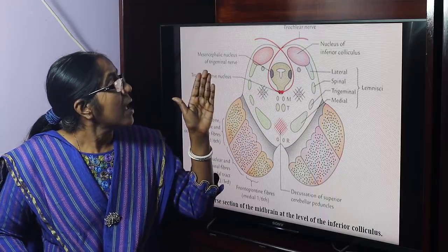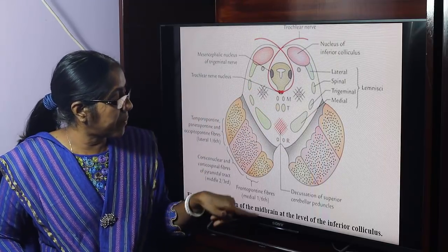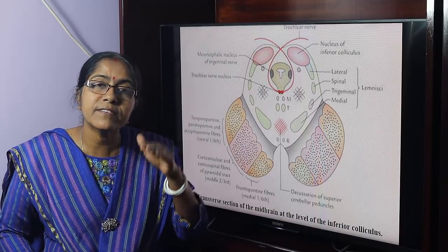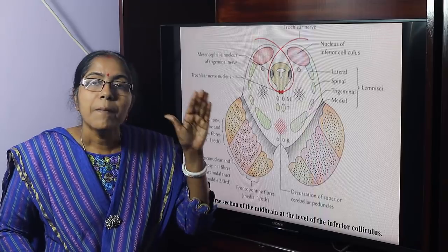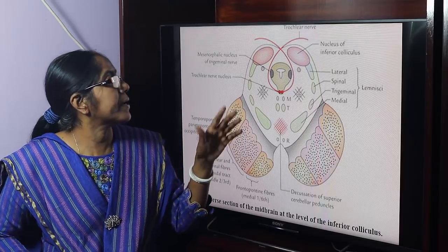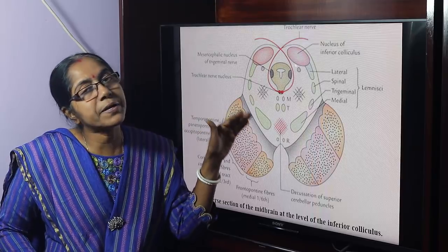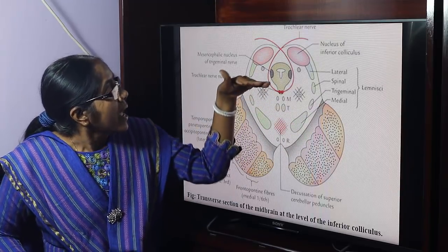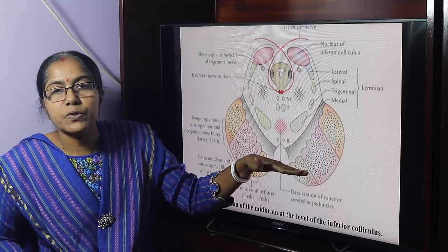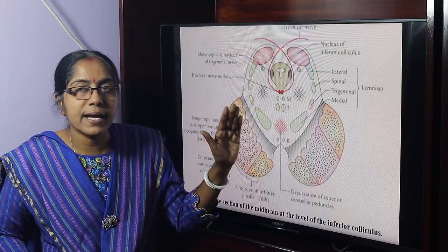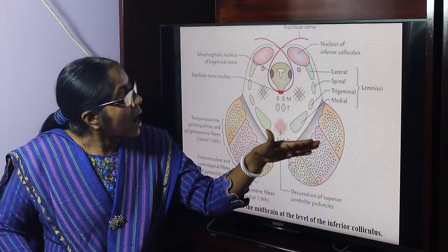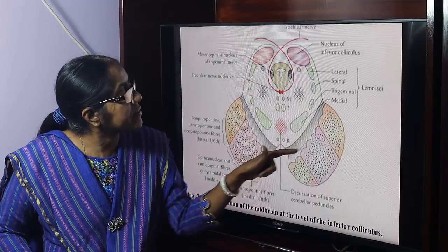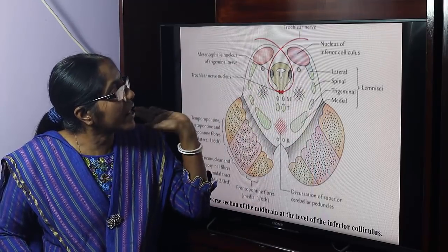At the transverse section of the midbrain at the level of the inferior colliculus, we can see the white matter and grey matter structure. The cerebral aqueduct is visible, and the cerebral peduncle from before backwards shows: crus cerebri, substantia nigra, and tegmentum.